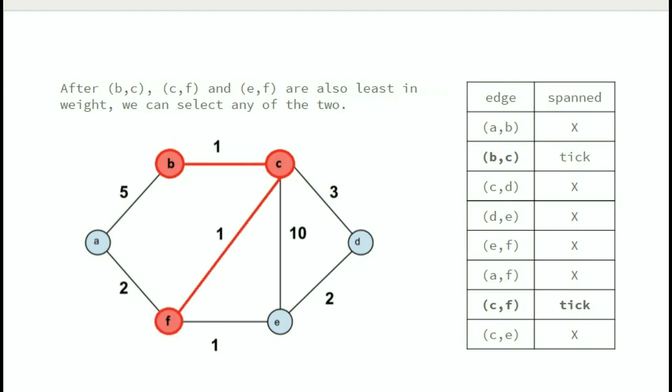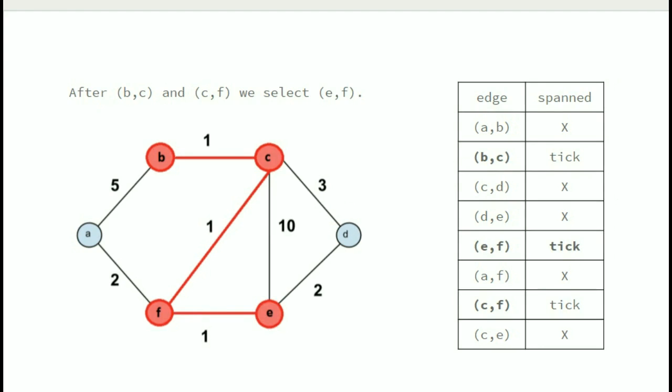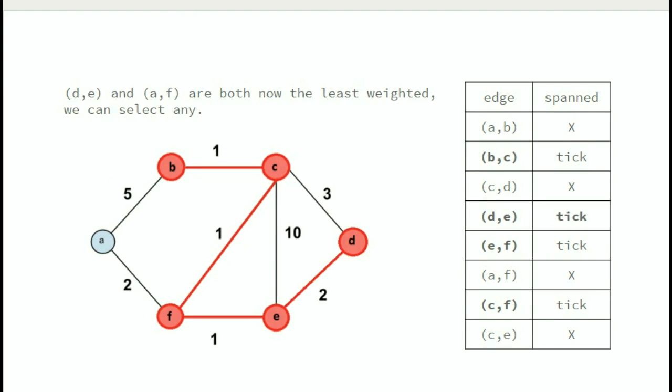Similarly we choose the second edge having minimum weight such that it does not form a cycle. Here edge CF is chosen which has weight 1 and is added to the MST. We mark vertex F as visited. After selecting edges BC and CF, we select edge EF which has weight 1 and add it to our minimum spanning tree, marking E as visited.